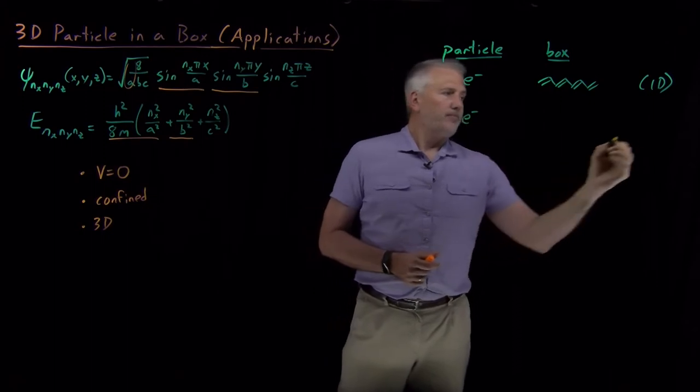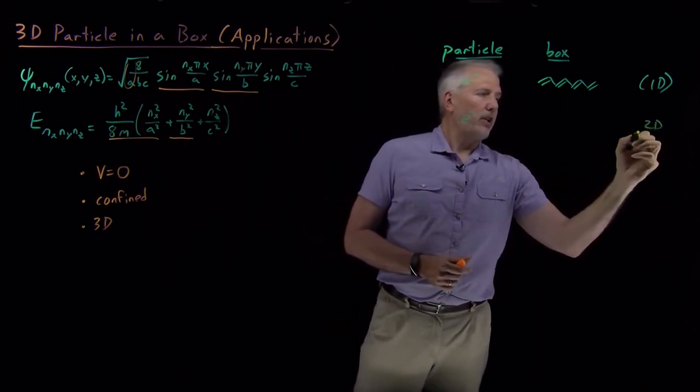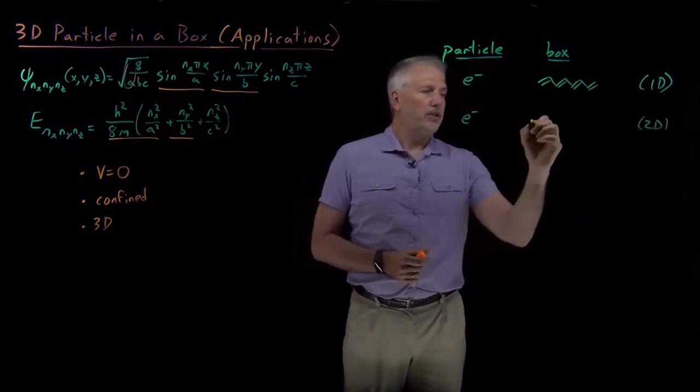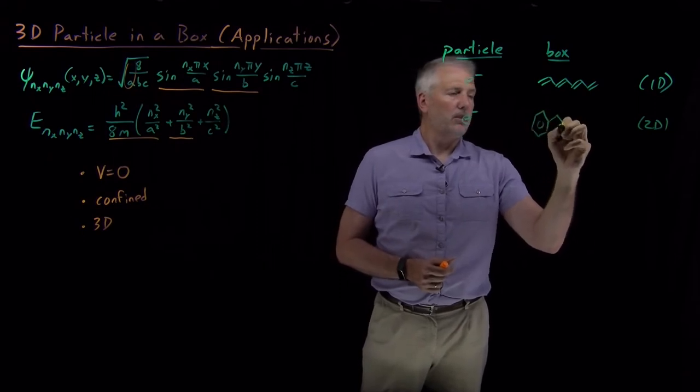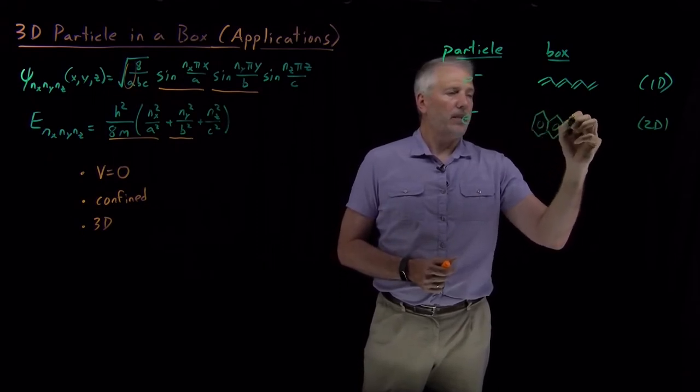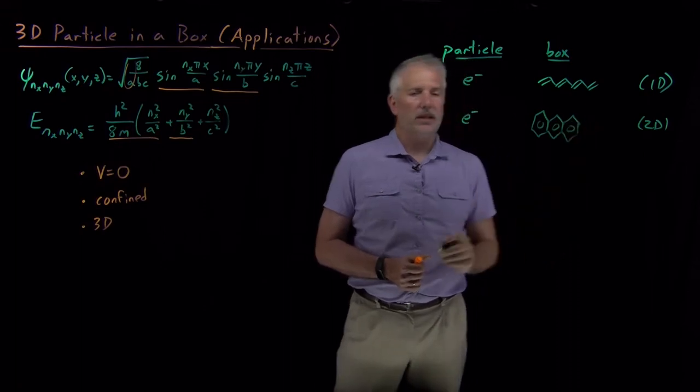There's a very similar example. If I think of a conjugated molecule that's confined to two dimensions, I can draw organic molecules like naphthalene, or if I add a third benzene ring, that's anthracene.